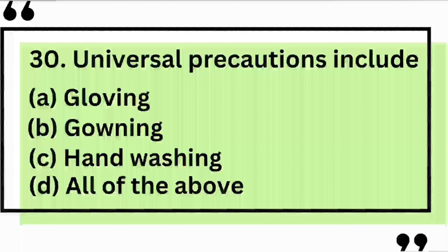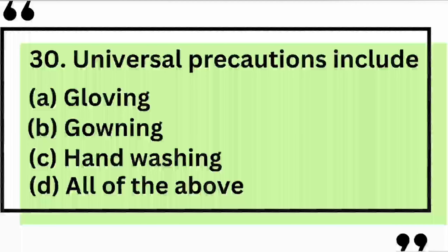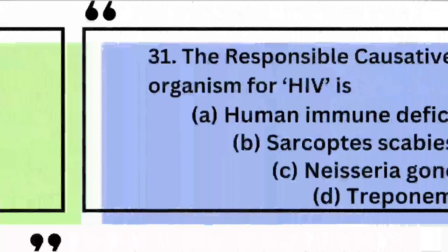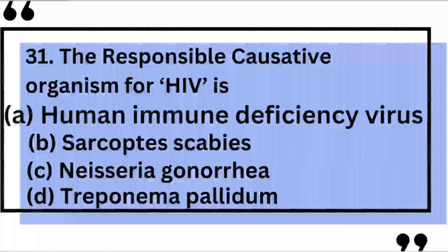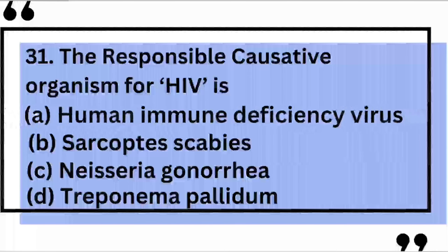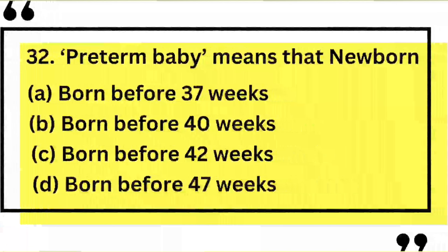Universal precautions include — yes, the correct answer is D: all of the above. The responsible causative organism for HIV is — yes, the correct answer is A: human immunodeficiency virus. Preterm baby means that the newborn — yes, the correct answer is A: born before 37 weeks.